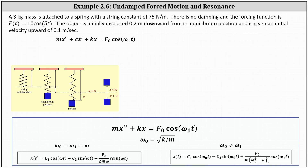Welcome to an example of undamped forced motion using a mass on a spring. We'll be solving the problem using the formulas shown below, which we derived in a previous lesson.